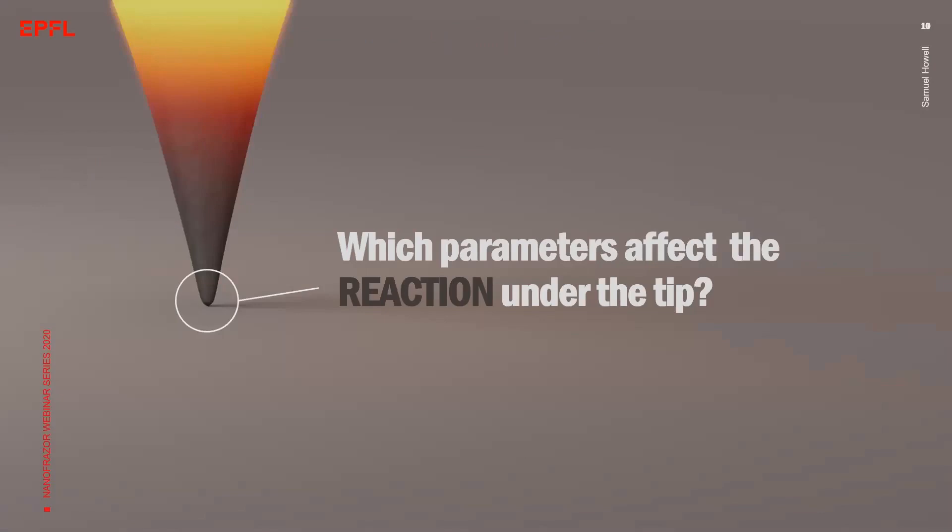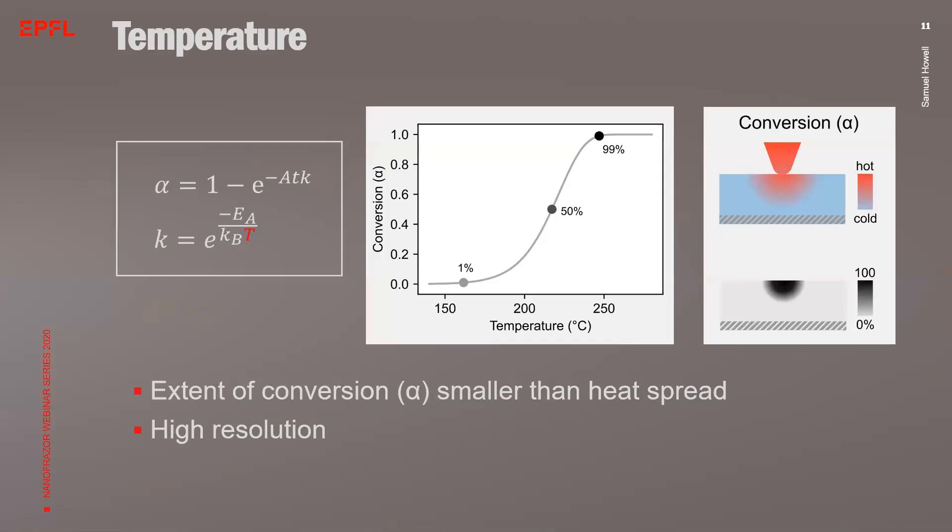The next question is, what happens when the material under the tip is heated to a certain temperature? We want to trigger a reaction or a change in the material. Therefore, let's look at the main parameters that affect such reactions. The most important parameter is the temperature. For example, for a simple thermal degradation reaction, the kinetics can be described by a first-order rate equation as shown in the slide. The relative amount of converted material alpha can be expressed as a double exponential function with respect to the temperature. The conversion function or the reaction function is plotted as a function of the temperature. The circles here indicate 1%, 50%, and 90% completion of the reaction.